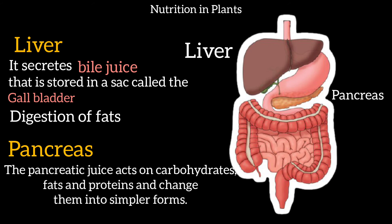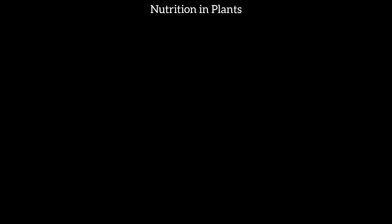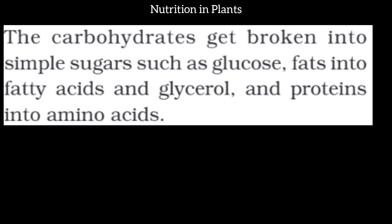To summarize the small intestine: the liver secretes bile juice which digests fats; the pancreas secretes pancreatic juice which digests carbohydrates, fats, and proteins. Then, in the lower part of the small intestine, intestinal juice completes digestion — carbohydrates are converted into simple sugars and glucose, fats into fatty acids, and proteins into amino acids.